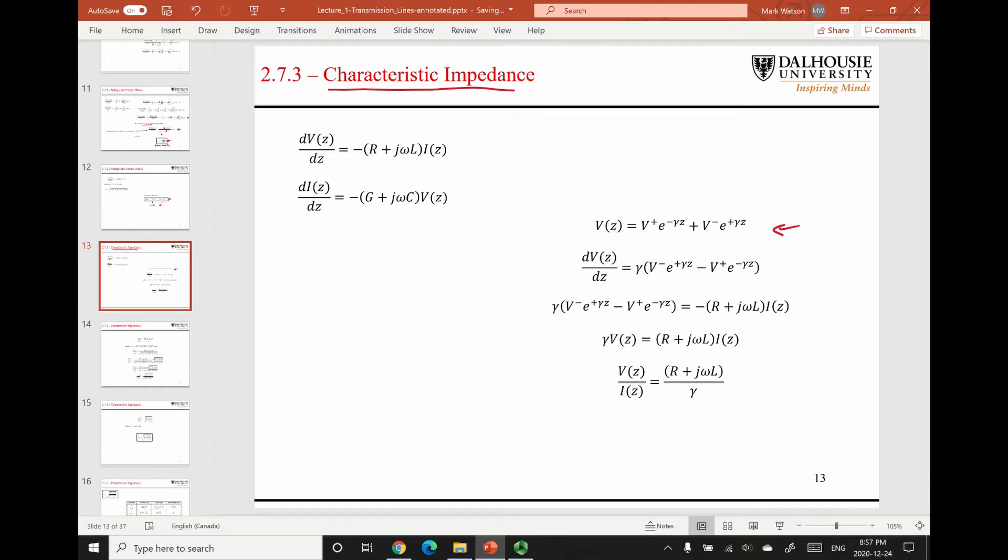If we assume that this is the solution to the wave equation, we can plug this equation into the transmission line equation. We take the first spatial derivative, which is shown here, set this term equal to the right-hand side of this equation, then multiply each side by negative one.